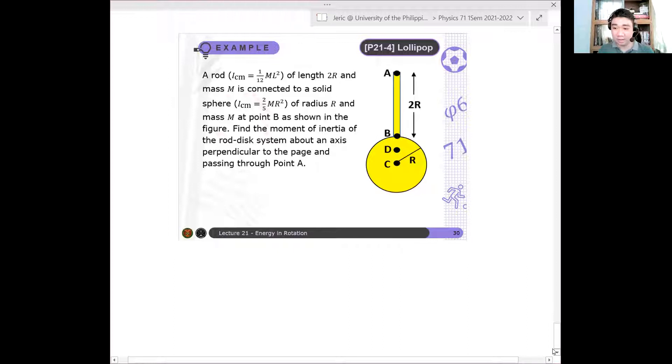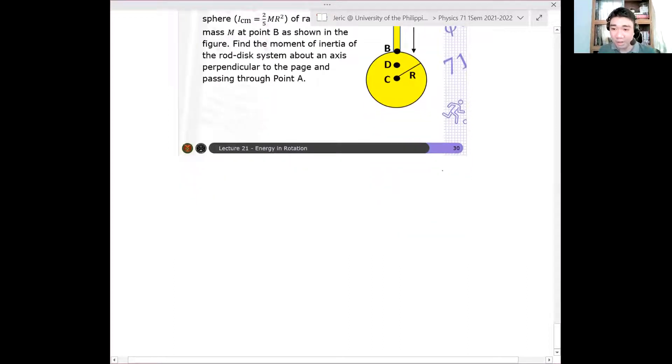So I will redraw it such that if this is my rod, and then this is the circle. This is the axis of rotation. Let's say this is point A. The length of this is 2R. The radius of the sphere is R as well.